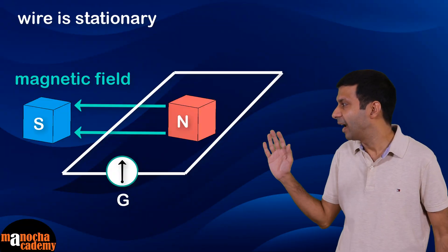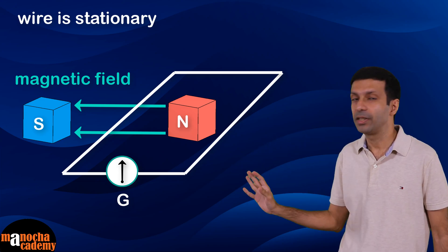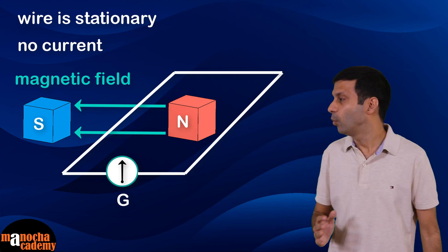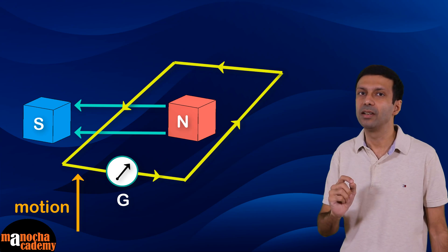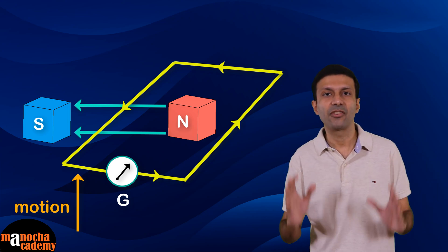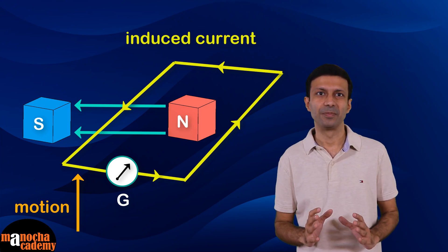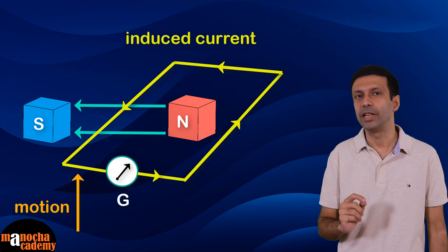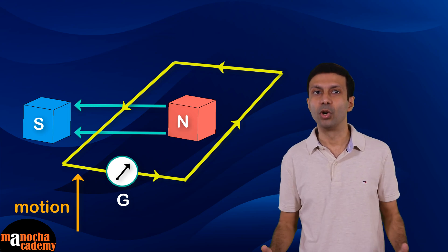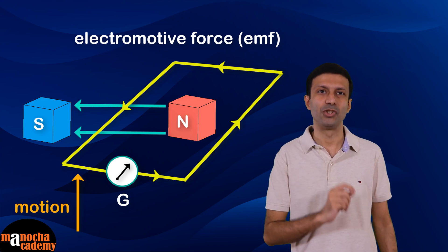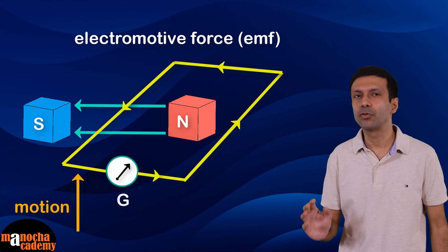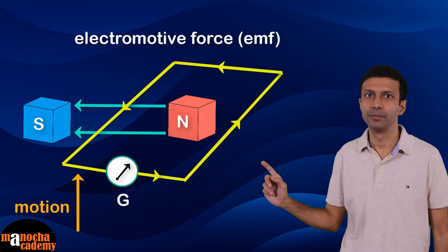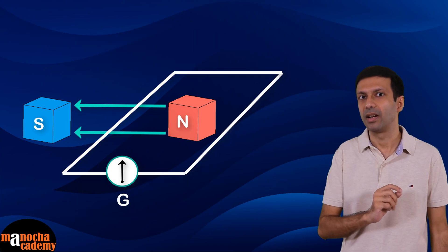When the wire is stationary — held in the magnetic field without moving — the galvanometer shows no deflection, meaning there is no electric current. When the wire is moved upwards rapidly, there is a deflection in the galvanometer, indicating that electric current is produced. This is called induced current. A potential difference, or voltage, has been induced across the ends of the wire — this induced voltage is called electromotive force, or EMF. The EMF and electric current are produced only as long as there is motion of the wire; when the motion stops, there is no EMF and hence no current.